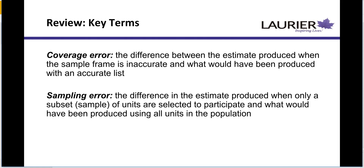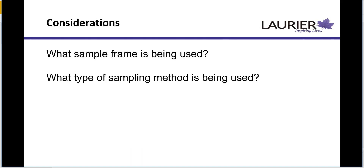Coverage error is what happens when the sample frame isn't accurate, and therefore the estimate we get — the list we get — is not representative of the full population. We would do much better with an accurate list. Sampling error is the difference when we don't get a good representation in our sample — we only get some units of our population and it's not representative of the whole group. So those are two different types of error: coverage error and sampling error, with different ways of dealing with them.